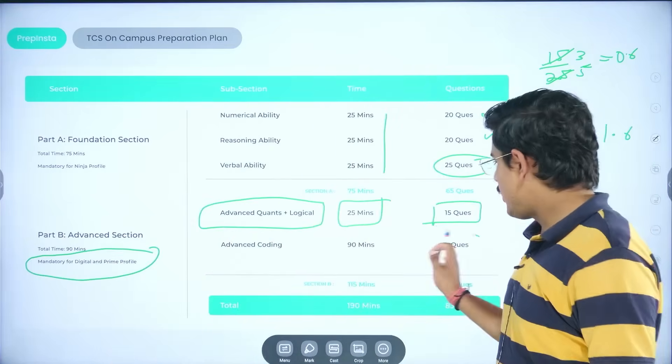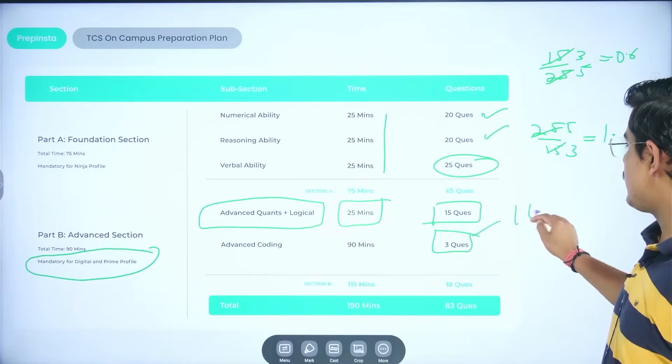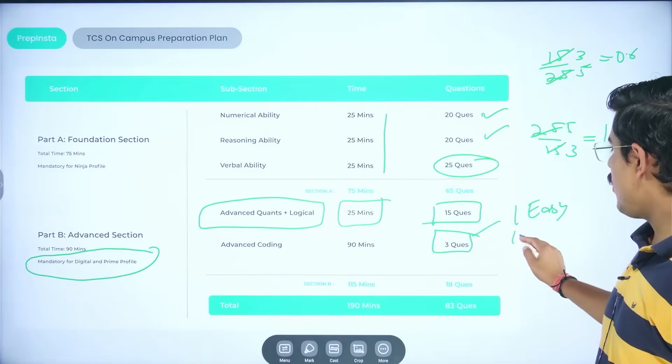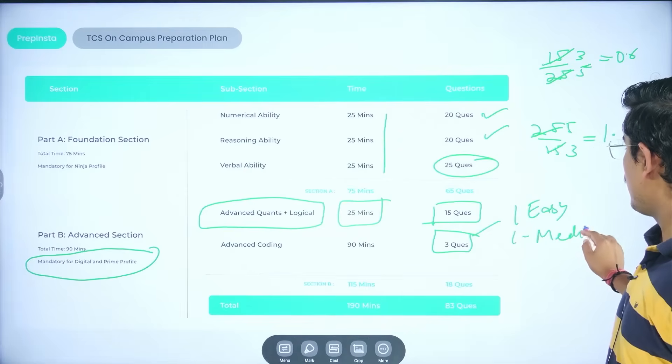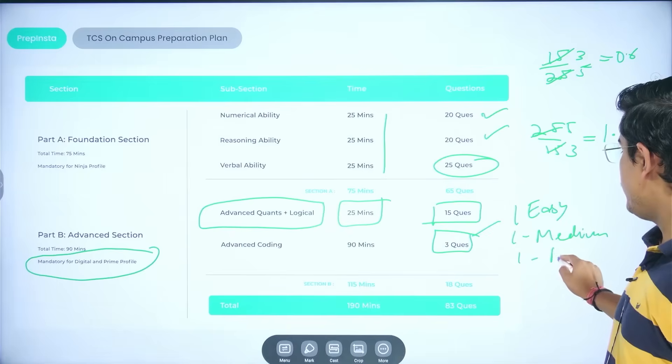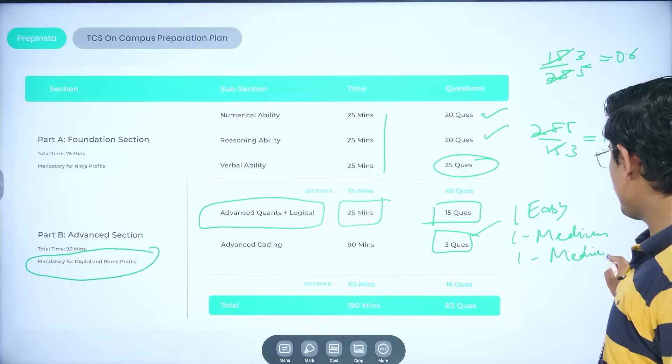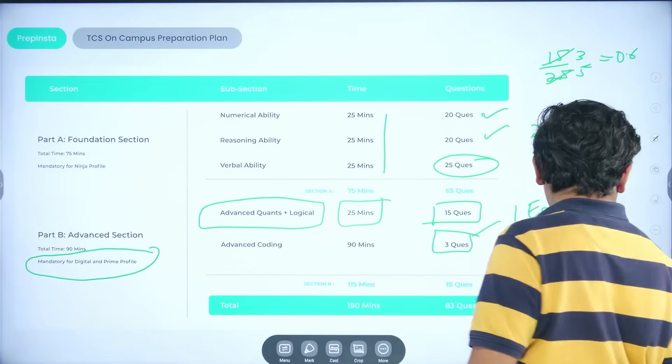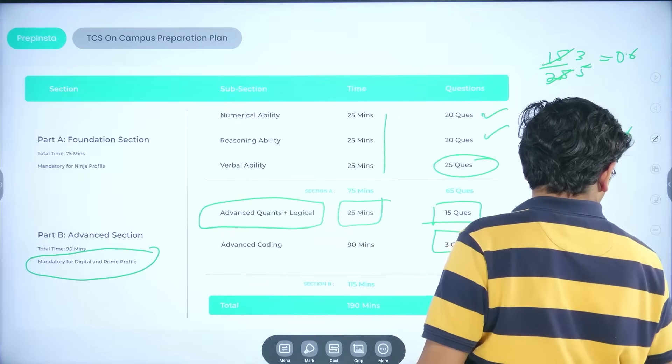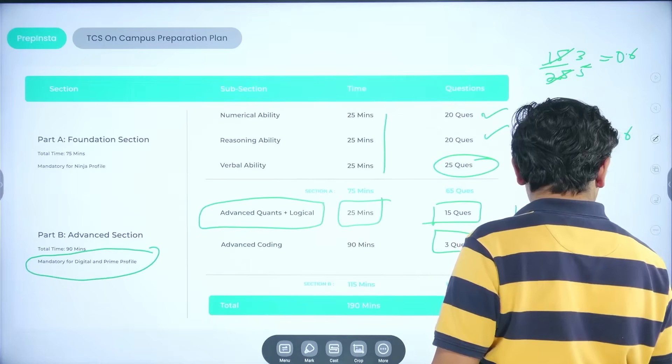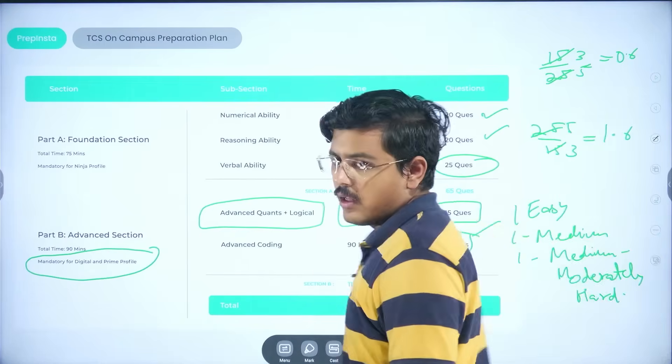When I go to coding portion, you have three questions. One is generally easy. One is medium. And the other one is medium to hard. I would say moderately hard.